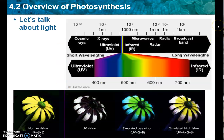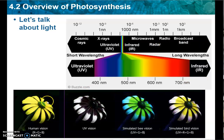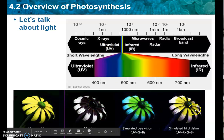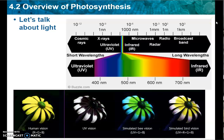So let's talk about light. Light energy travels in waves, and we get ours from the sun. We can't even see most of what gets here, but it's still important. This is the visible part of the spectrum. We have x-rays and cosmic rays, infrared, microwaves, and radar. Here you can see human vision versus UV vision — the ultraviolet — simulated bee vision, and bird vision. We're going to talk a little bit about how they see things differently than us.